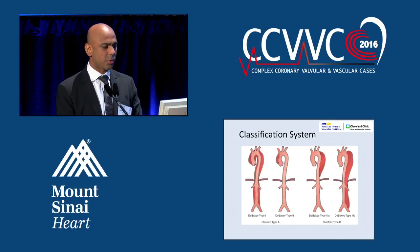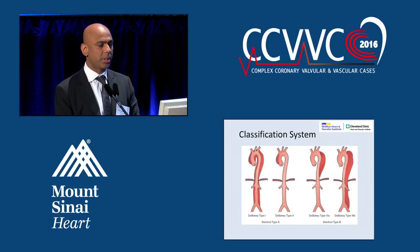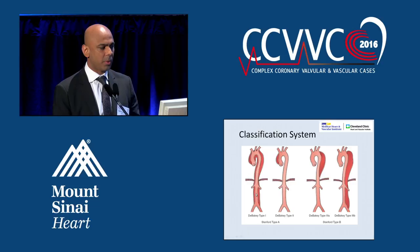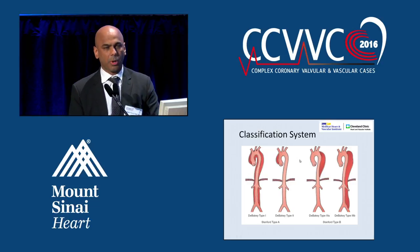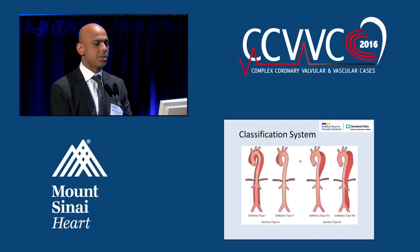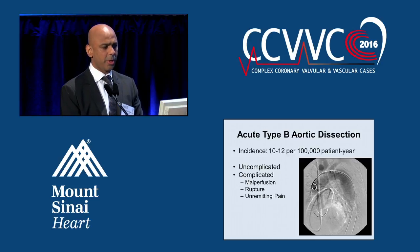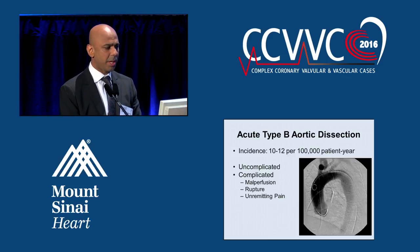This is a schematic diagram showing what a type A dissection is. Any involvement of the ascending portion of the aorta classifies it as a type A — it could extend all the way down and still be type A. Type B is localized distal to the left subclavian artery. The incidence is about 10 to 12 per hundred thousand patient-years.